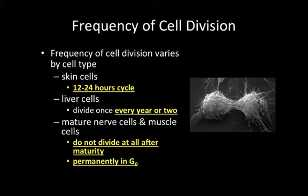Mature nerve cells and muscle cells actually don't divide at all after maturity. They're permanently arrested in what's called a G0 phase — they perform their normal functions but don't enter mitosis. One area of future research is how to get these cells, especially nerve cells, to divide again for people with permanent nerve damage or spinal cord injuries, which could solve some of those related problems.